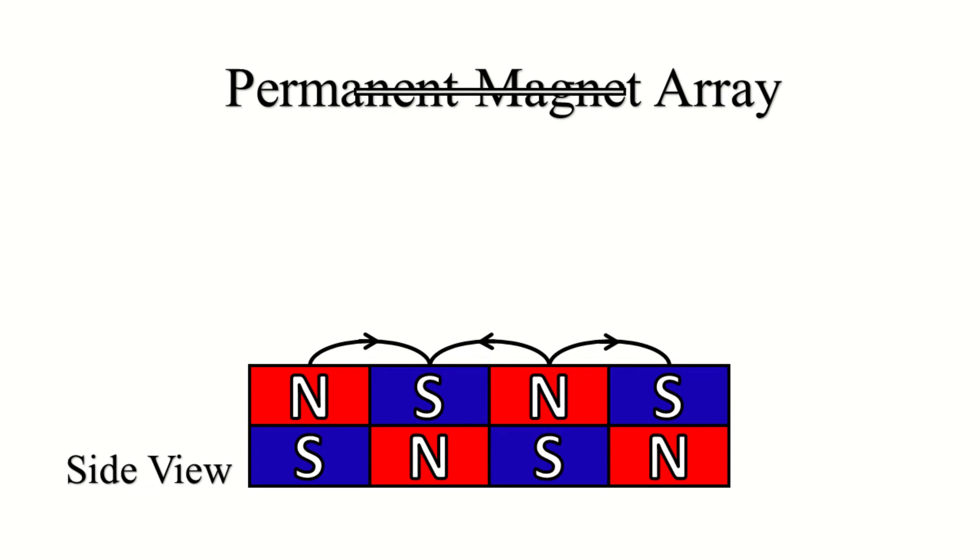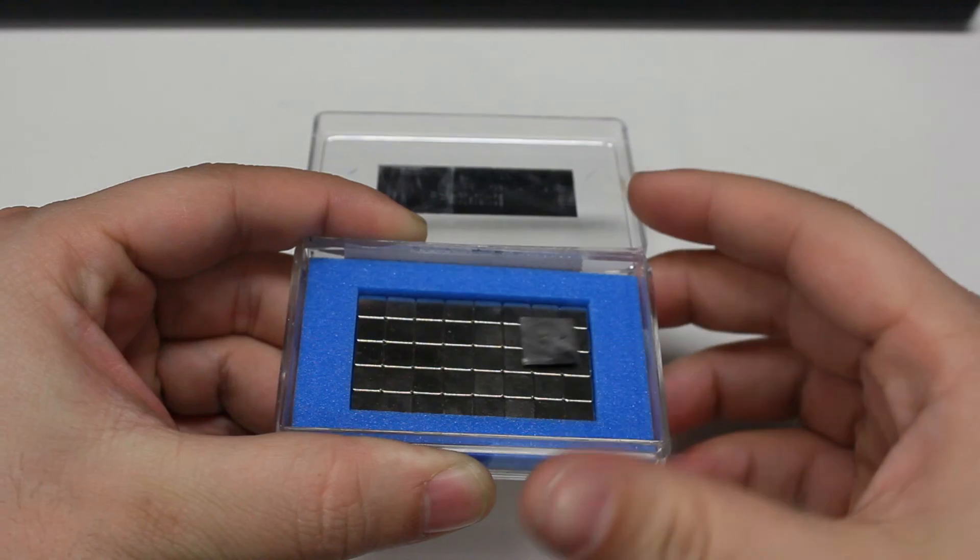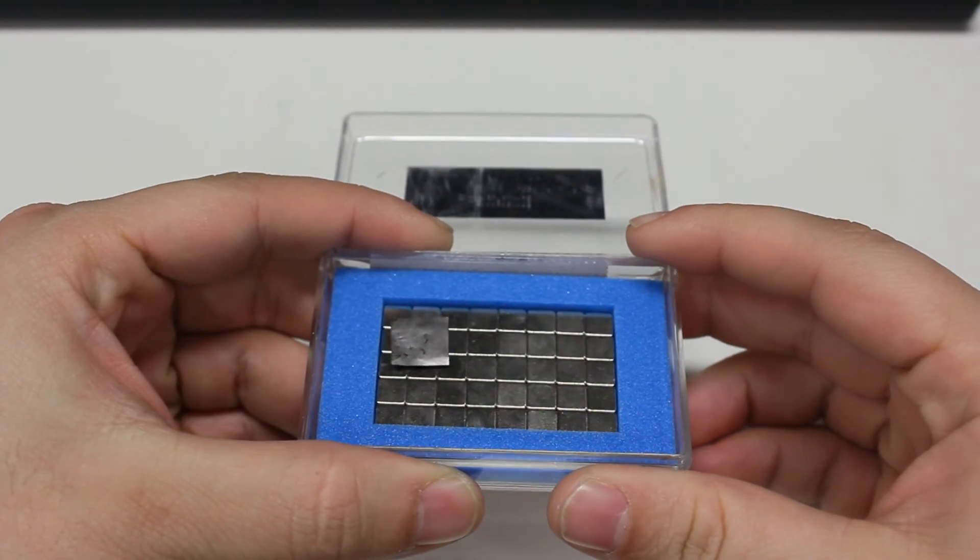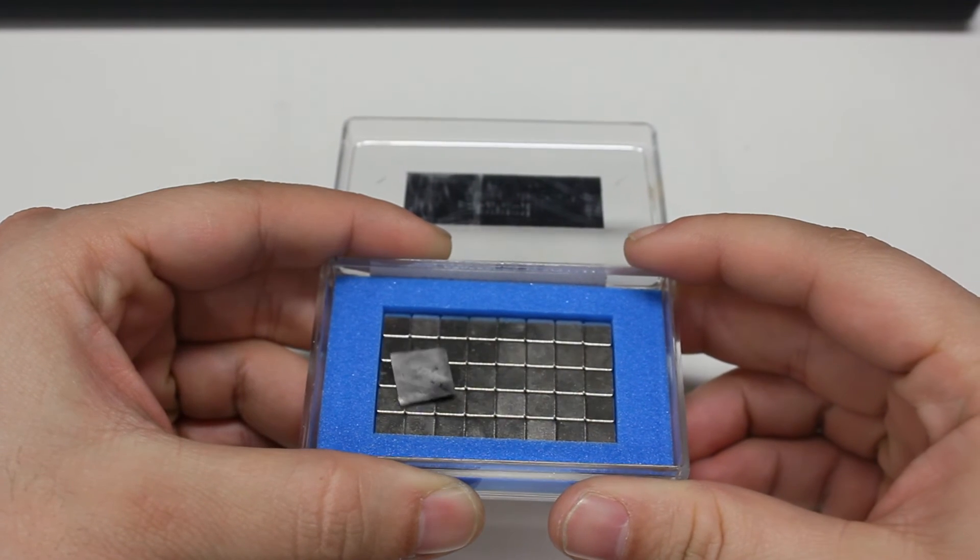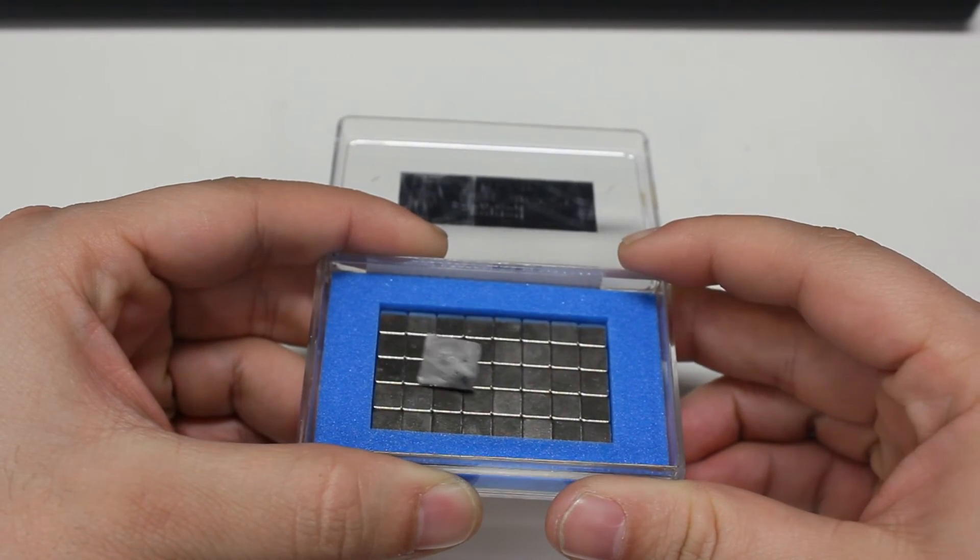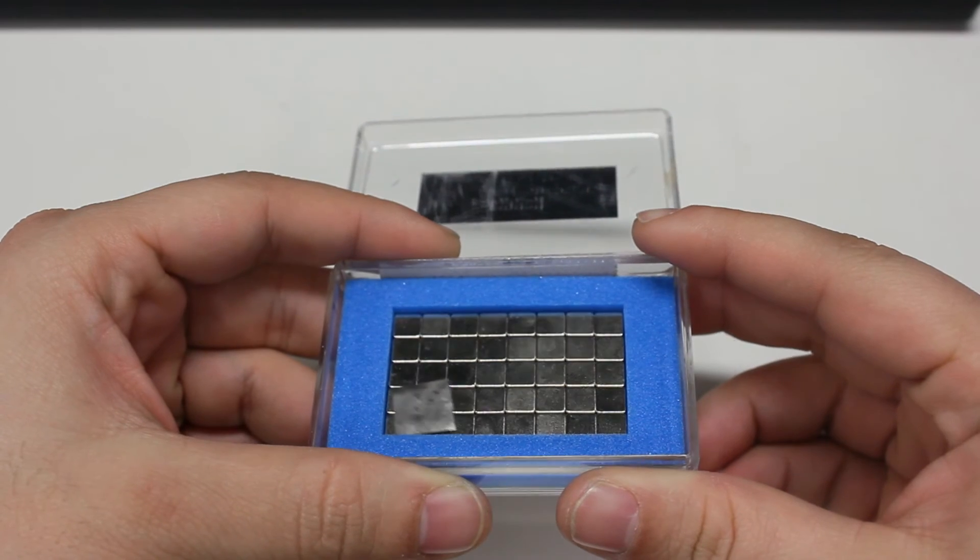If we place a very thin graphite sheet over this magnetic field, due to the diamagnetic nature of the graphite, it floats at a very small distance from the permanent magnets. These magnetic forces are very small and cannot lift a heavy load.